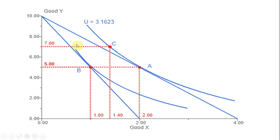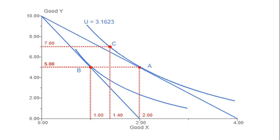Sliding the new budget constraint up until it just touches the original indifference curve, there would be a tangency at point C. At this tangency, the consumer would buy 1.4 units of X and seven units of Y. The movement from A to C — from 2 to 1.4 — represents the substitution effect of the price increase on good X. The remaining movement from C to B represents the income effect. So the substitution effect is minus 0.6 units (1.4 minus 2), and the income effect is minus 0.4 units (1 minus 1.4).